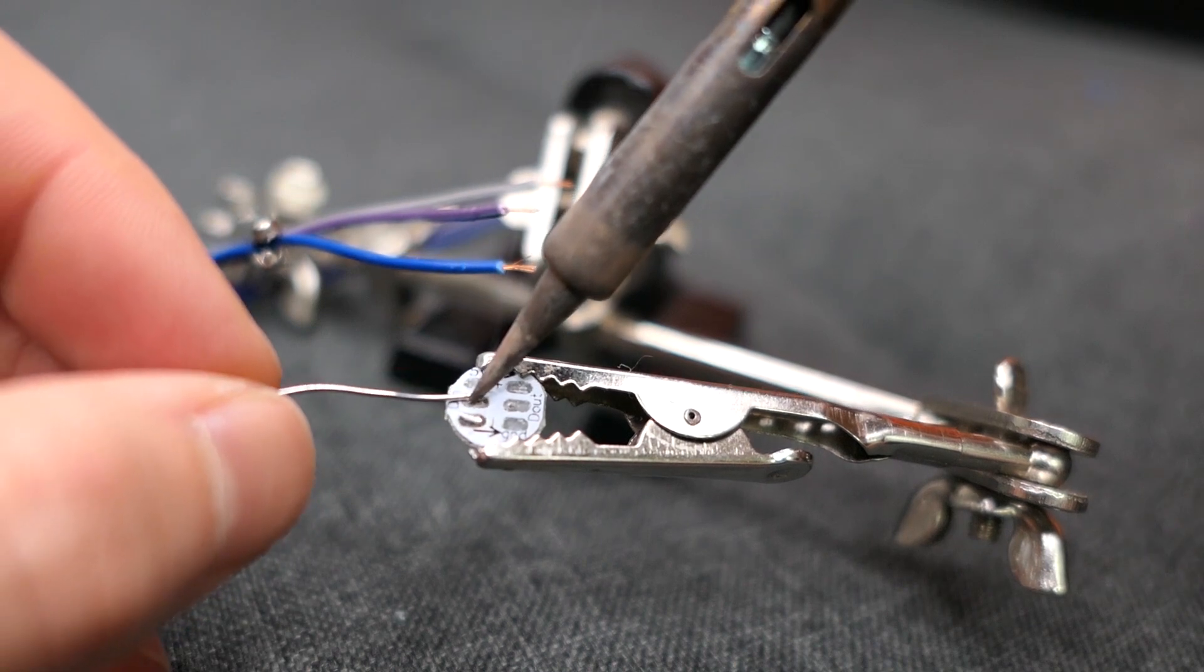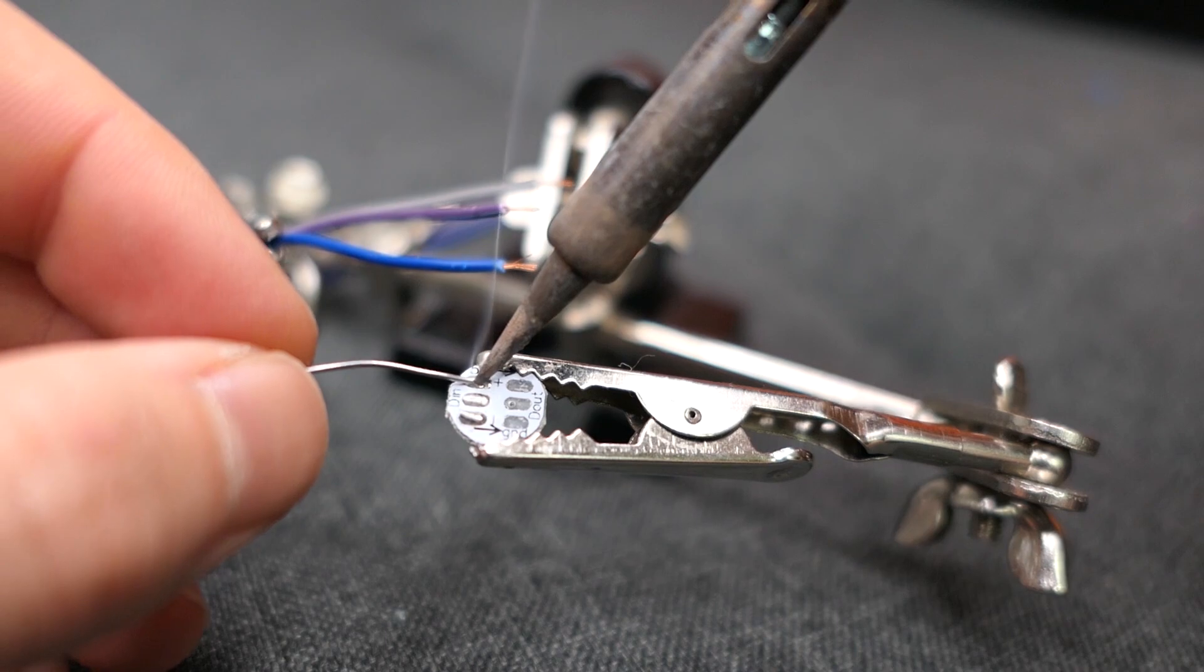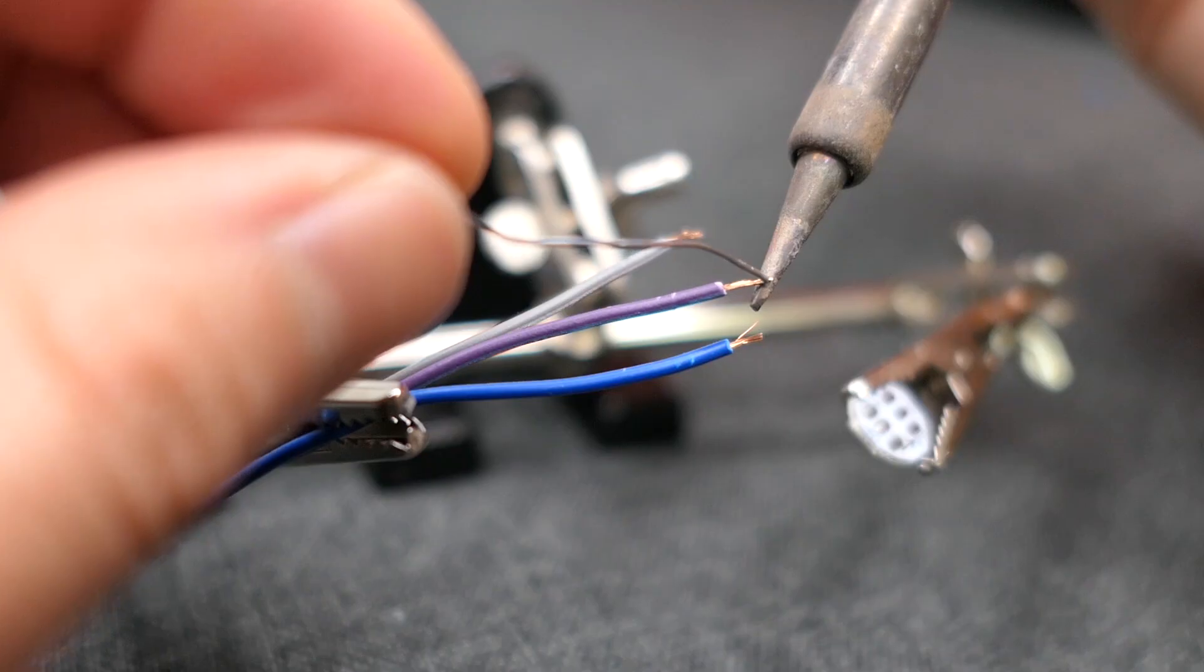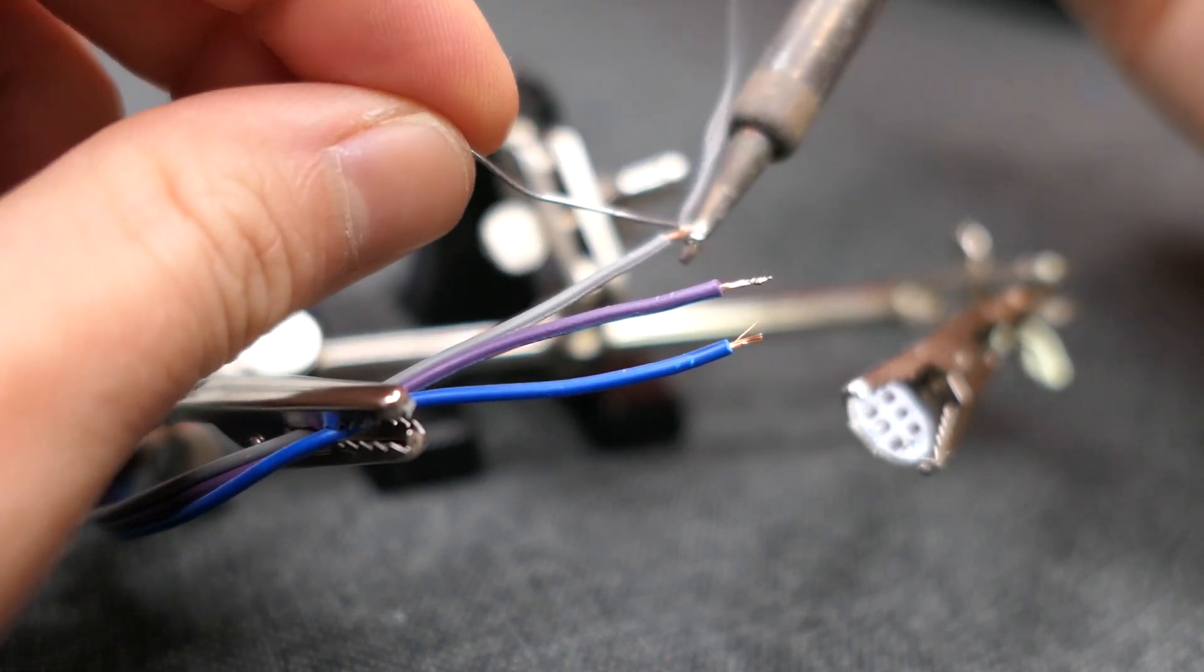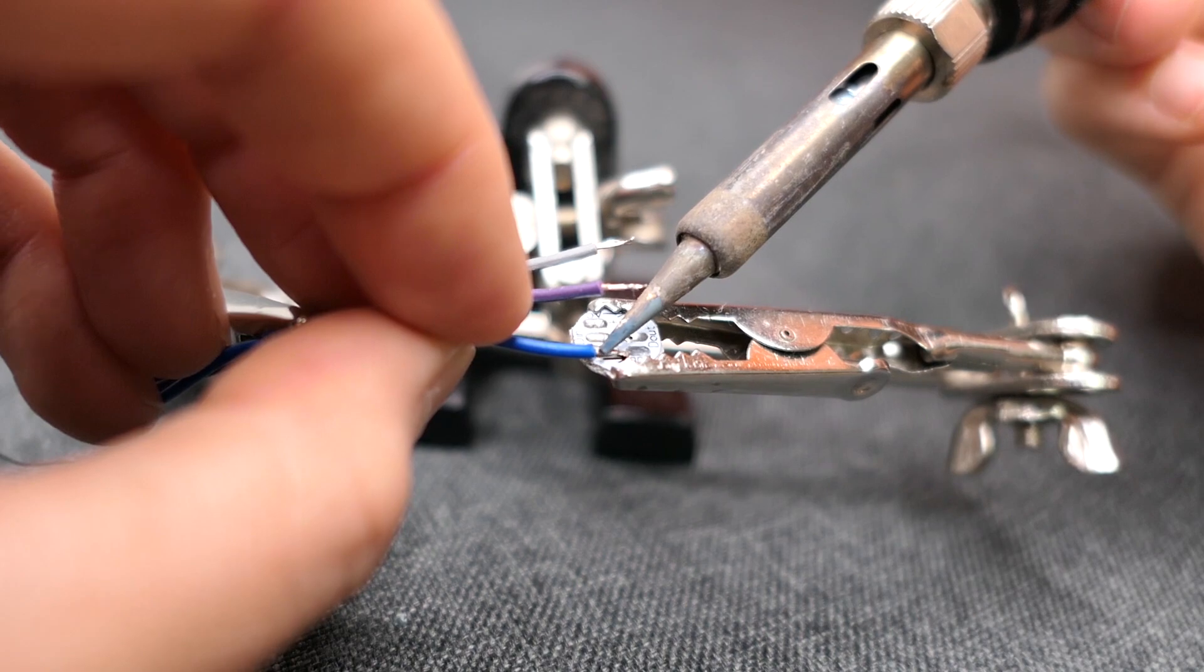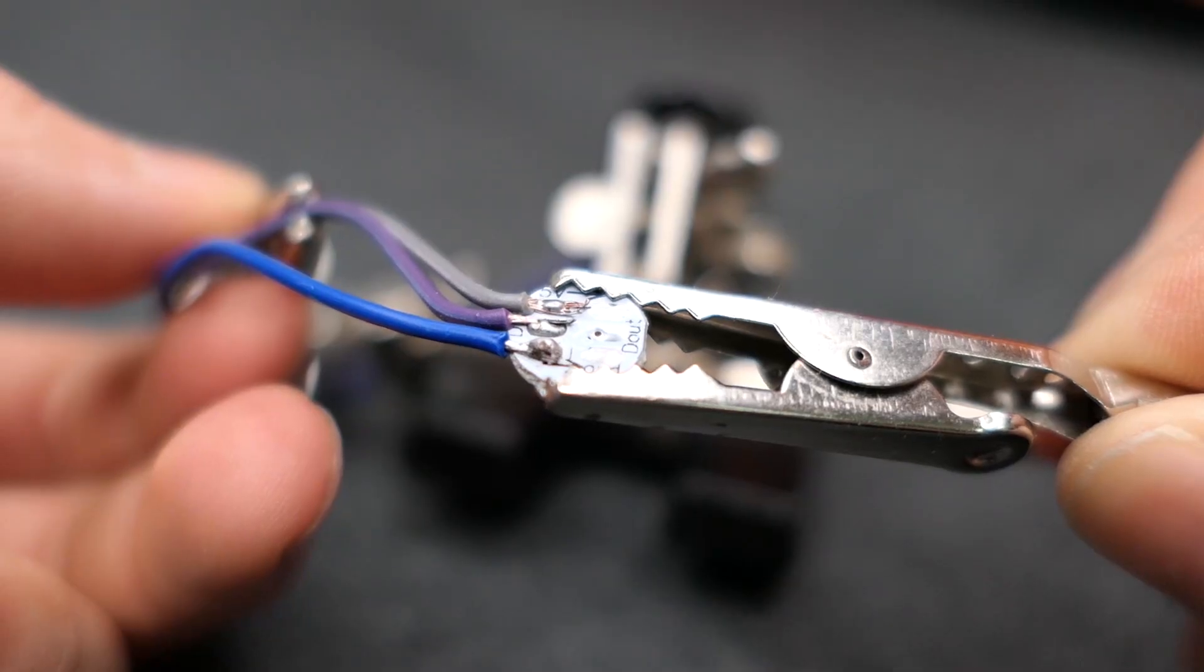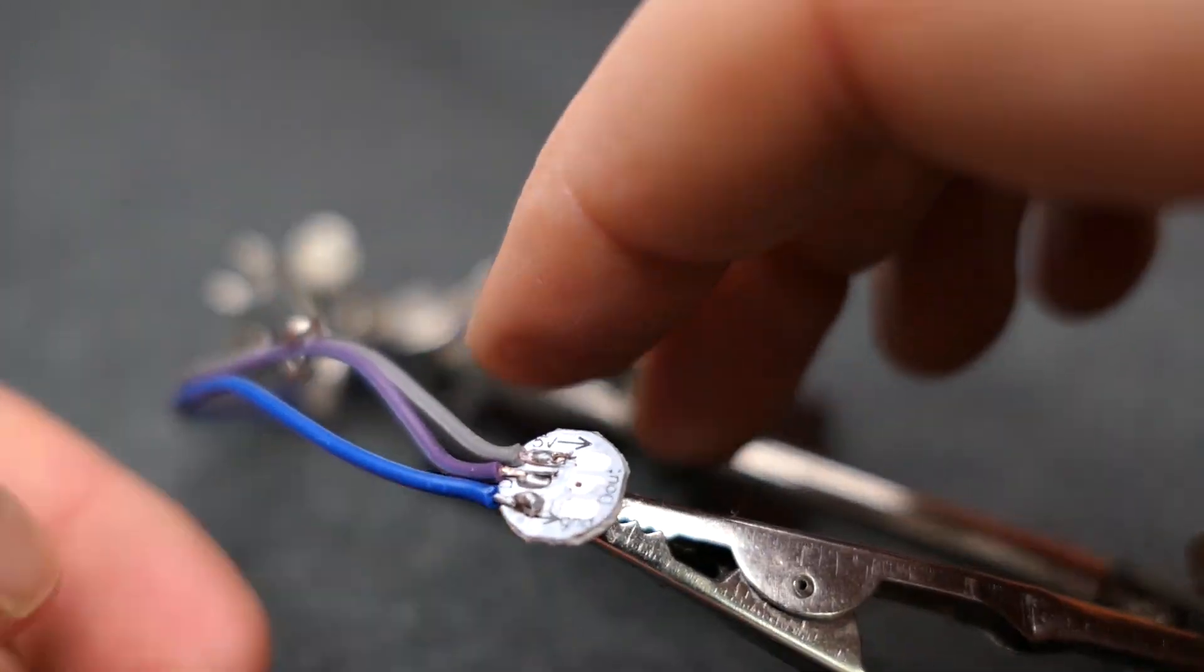Pre-solder each of the terminals on the LED. Similarly put a small amount of solder on the ends of each wire. Solder in place on the LED. Make sure that the wires are not in contact with one another.